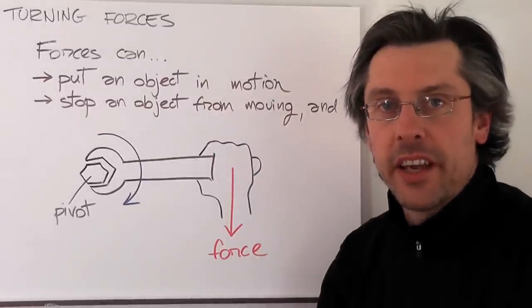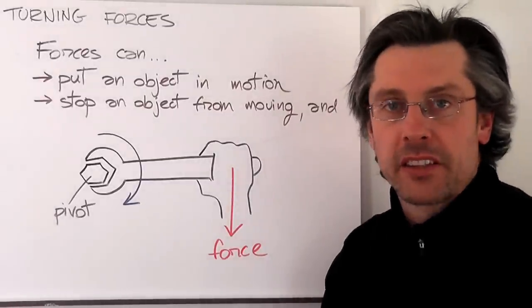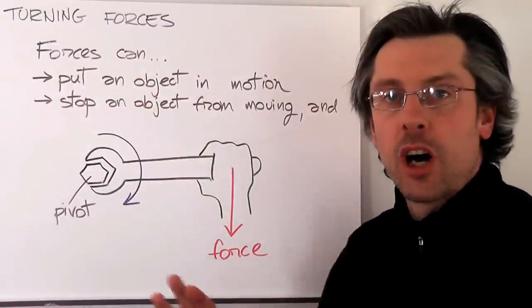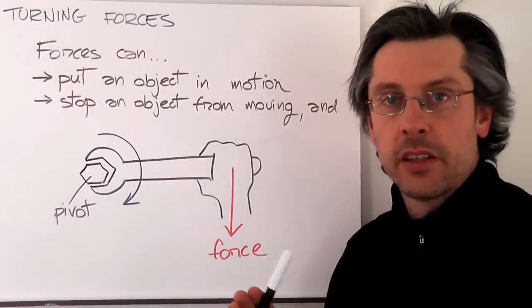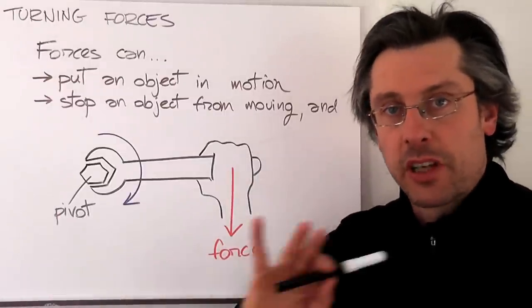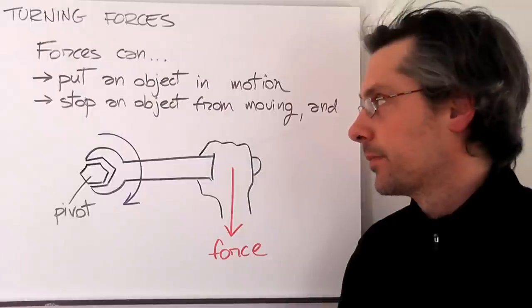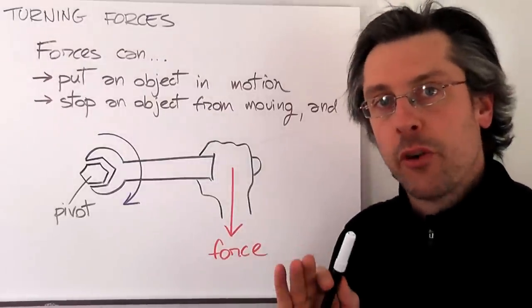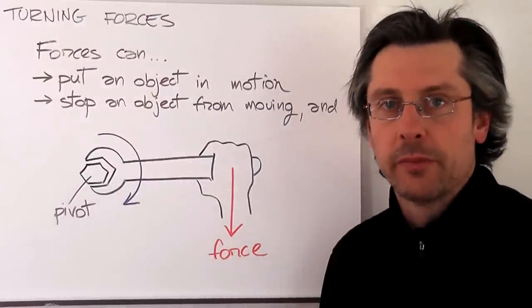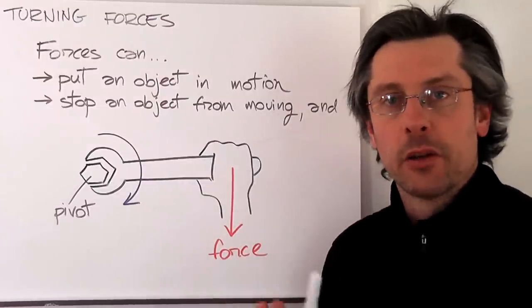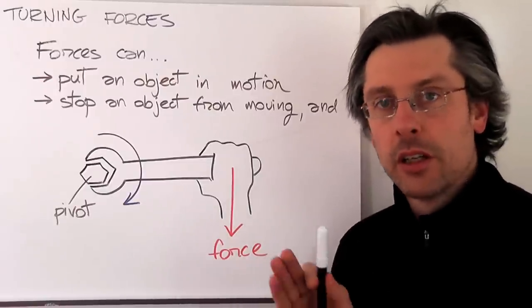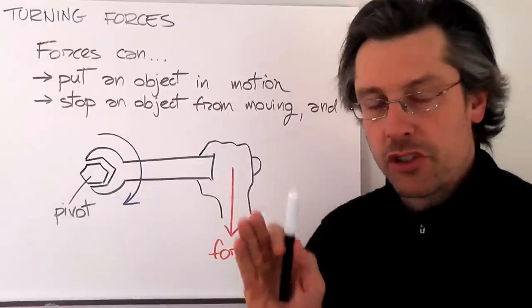So far we investigated two main effects of forces. We have seen that forces can start an object. So you have an object which is at rest, you apply a force, an unbalanced force, and that object accelerates so it can be put in motion. On the other hand, you can also use a force to slow down or stop altogether an object from moving. You can in general use a force to change the state of motion of that object, including changing the direction in which it's moving.